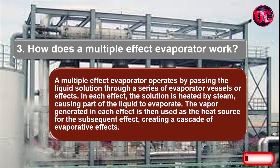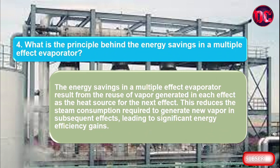How does a multiple effect evaporator work? A multiple effect evaporator operates by passing the liquid solution through a series of evaporator vessels or effects. In each effect, the solution is heated by steam, causing part of the liquid to evaporate. The vapor generated in each effect is then used as the heat source for the subsequent effect, creating a cascade of evaporative effects.